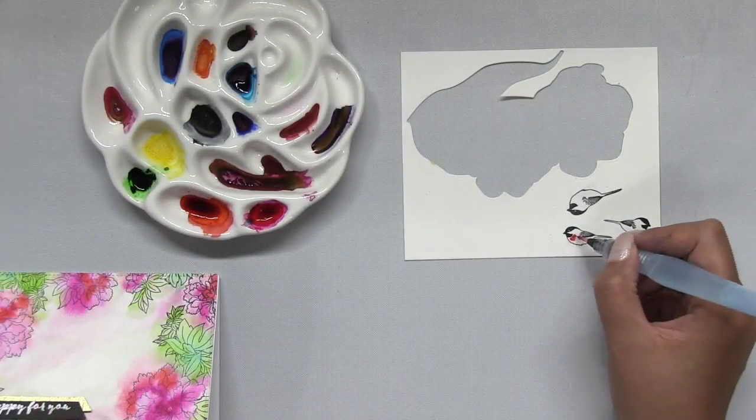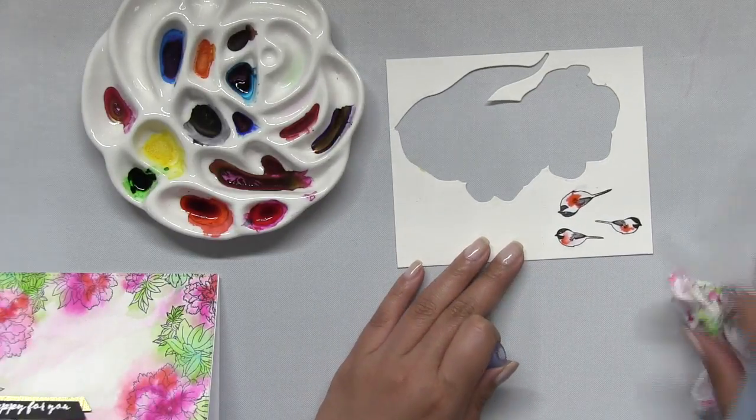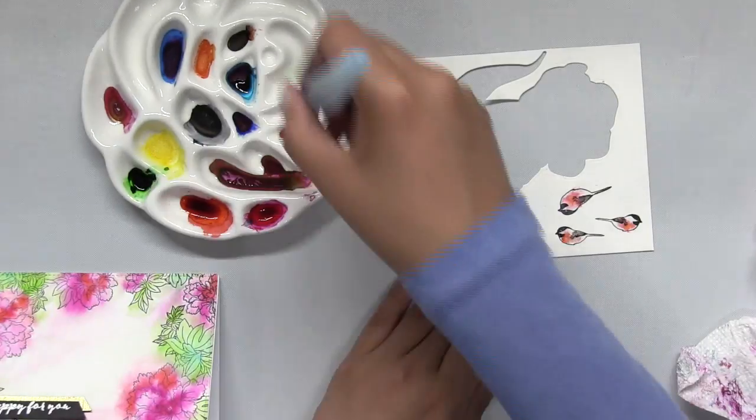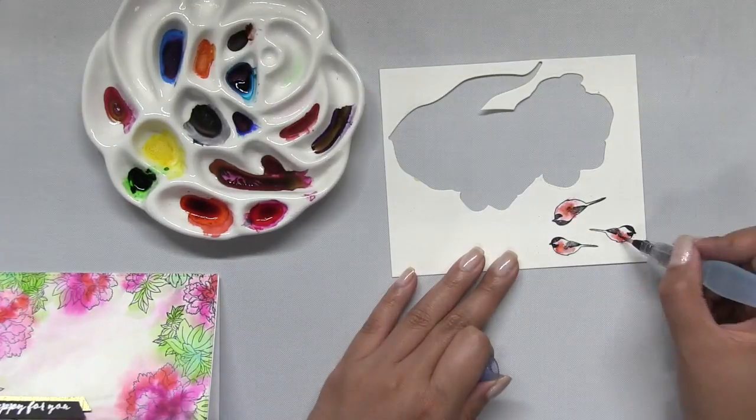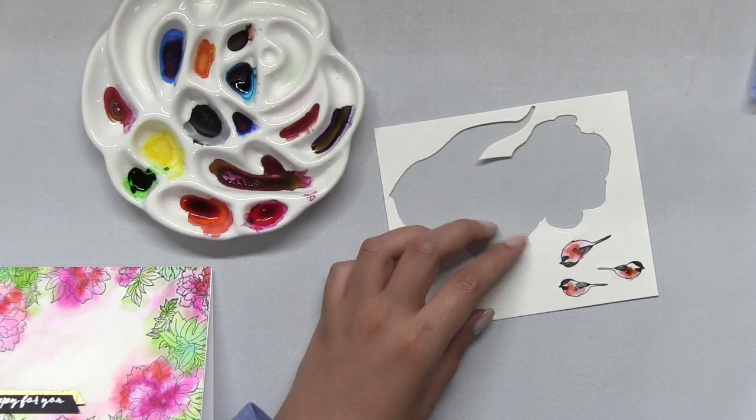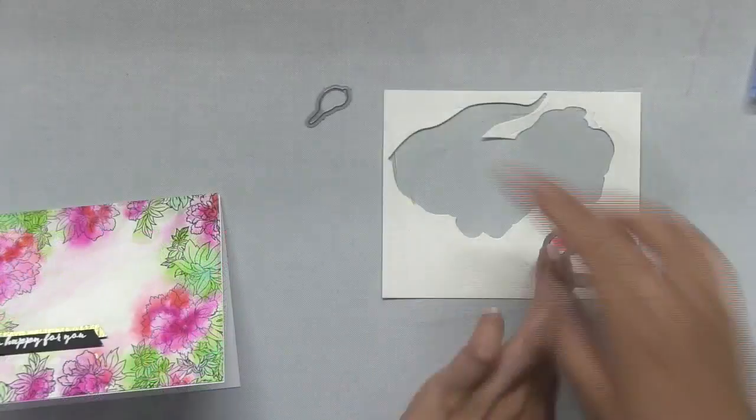Then I stamped the three adorable chickadee stamps from the nesting peony set onto watercolor paper and I just added a tiny bit of color. I'm using a combination of persimmon and saddle brown. All these watercolors are from the liquid radiant watercolor set A from that collection.